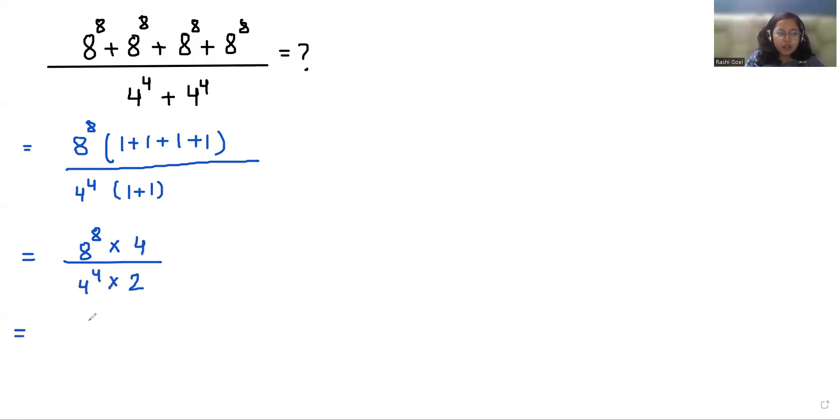Now I am going to convert all the numbers in terms of 2. So 8 we can write it as 2 power 3 whole power 8 times 2 power 2. Similarly 4 as 2 power 2 whole power 4 times 2.